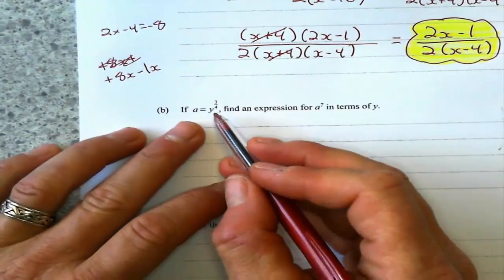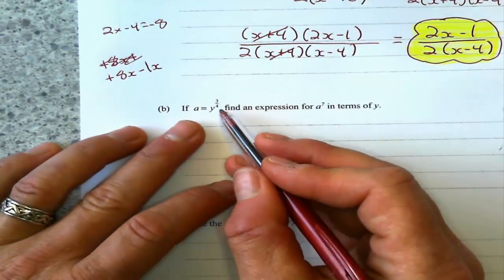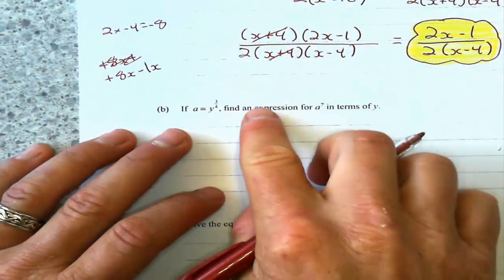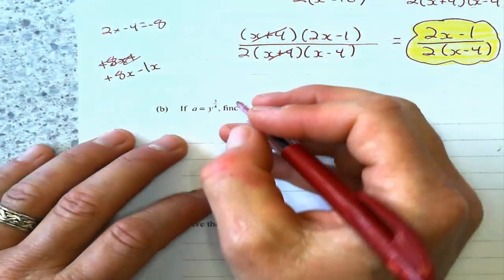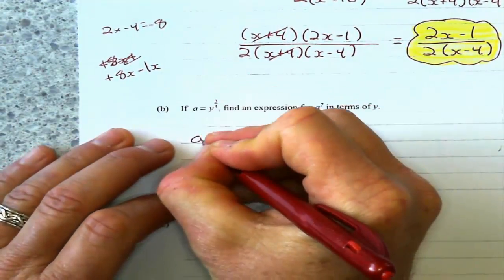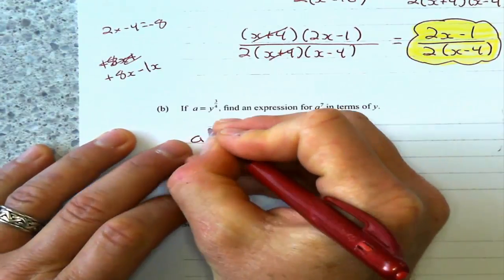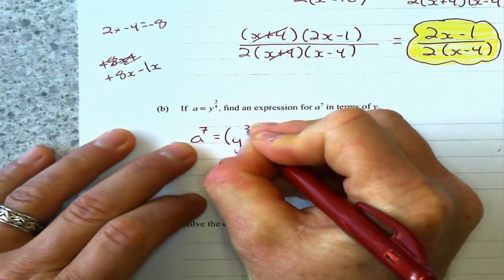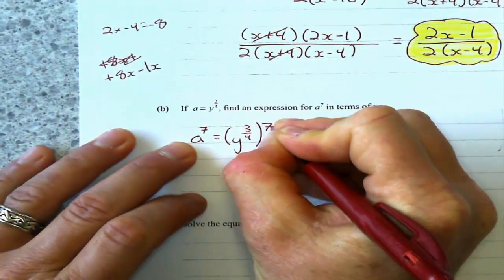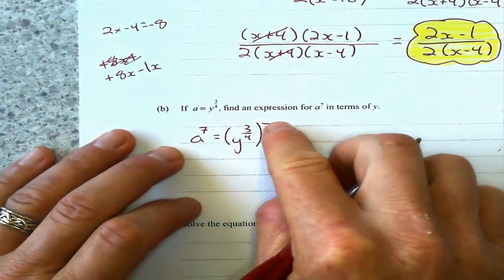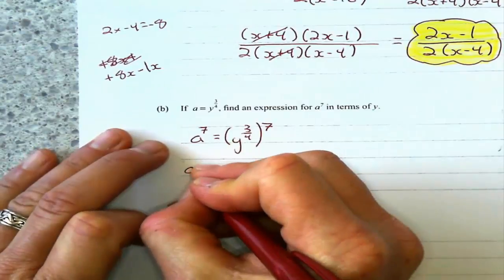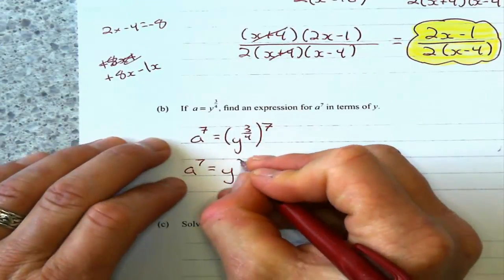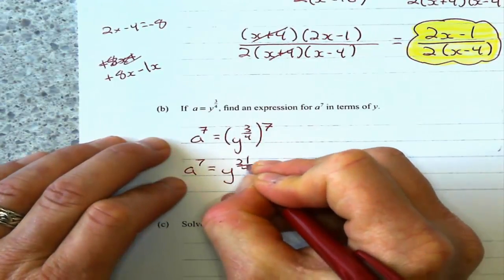Moving on to the next one. If a equals y to the power of 3/4, find an expression for a to the 7th in terms of y. What I did with this is I said, well, a to the 7th means I'm just going to take a and raise it to the 7th power, which means I'm going to take this expression and raise it to the 7th power as well. A power to a power gets multiplied. So that means a to the 7th equals y to the 3/4 times 7, which is 21/4.